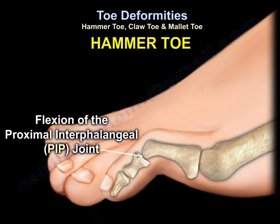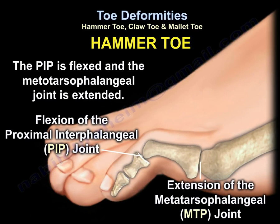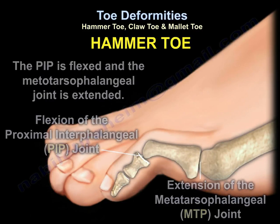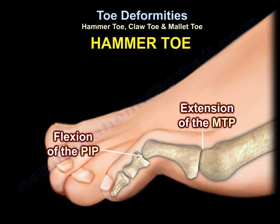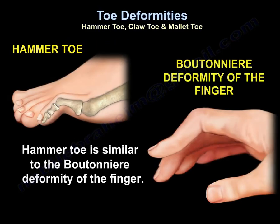Hammer toe involves flexion of the PIP joint. The PIP is flexed and the metatarsophalangeal joint is extended. You can see this in the diagram — flexion of the PIP joint and extension of the metatarsophalangeal joint. Hammer toe is similar to boutonniere deformity of the finger.